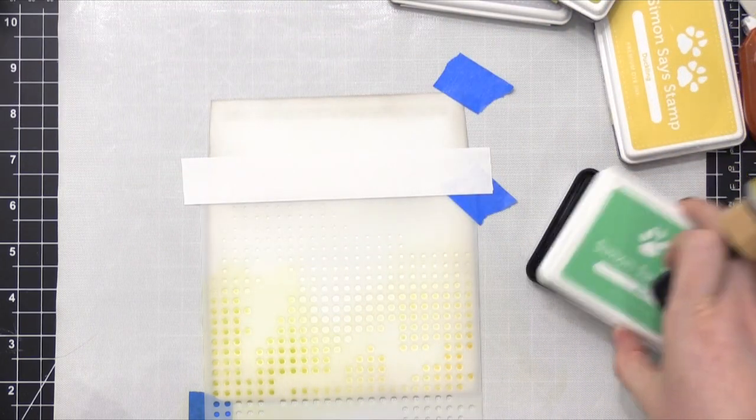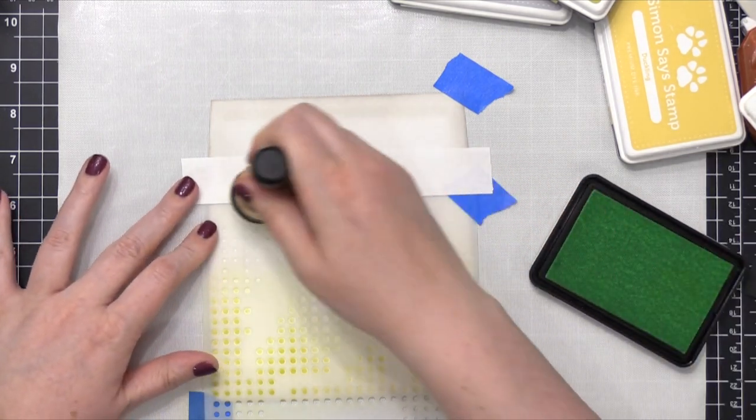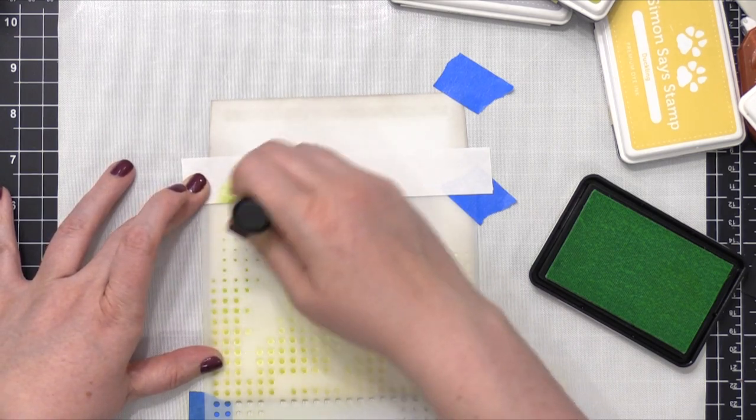And then I'm going to take my last color, which is the color Mint. And I'm gonna bring that in from the top, and just bring that over into the center area of the envelope.